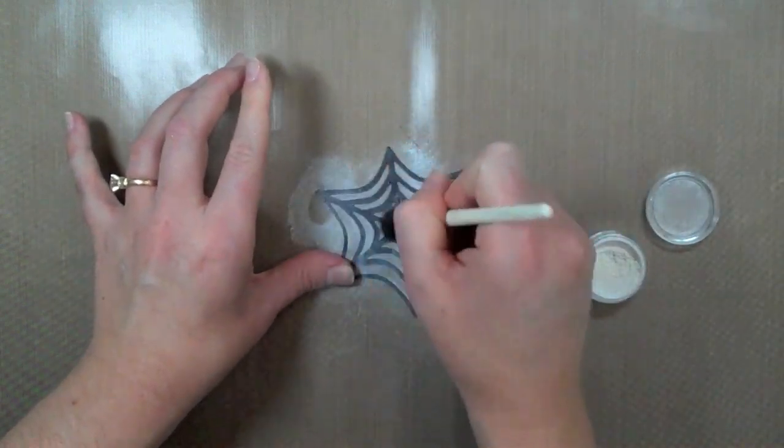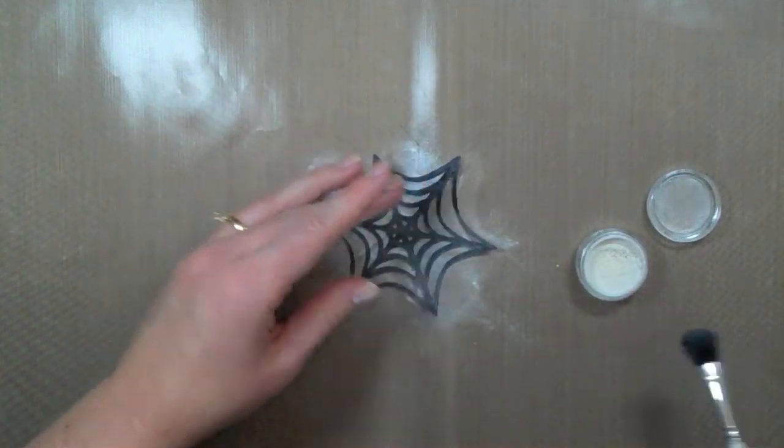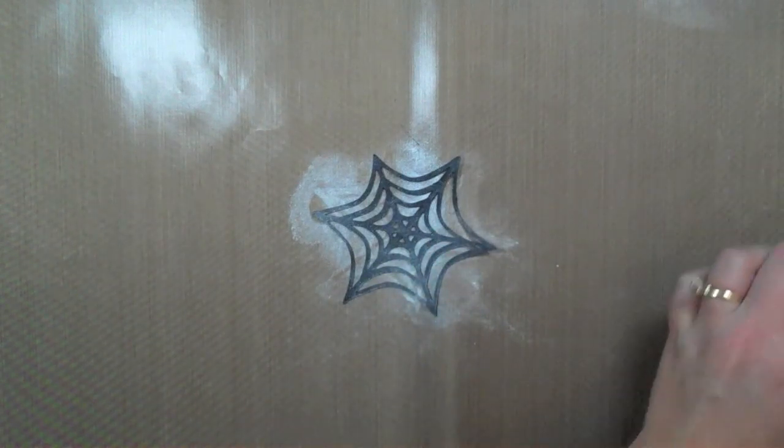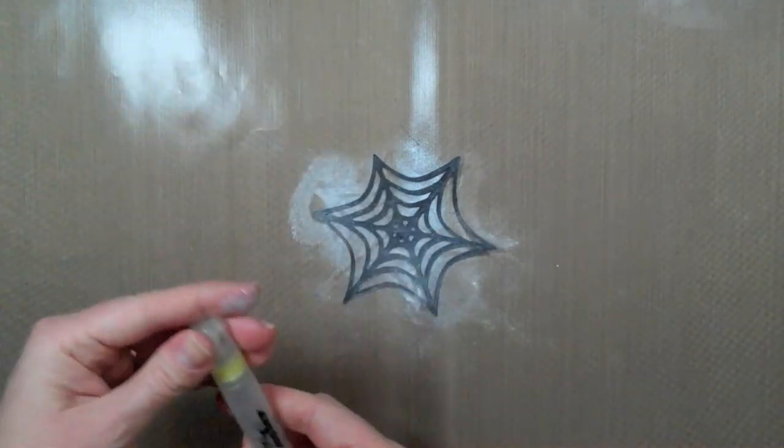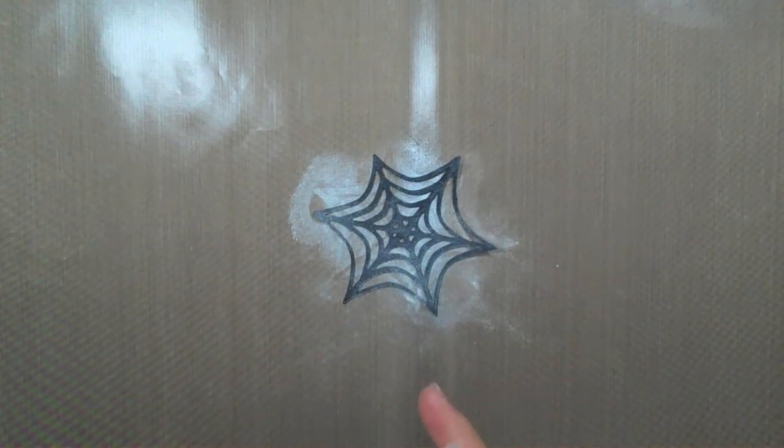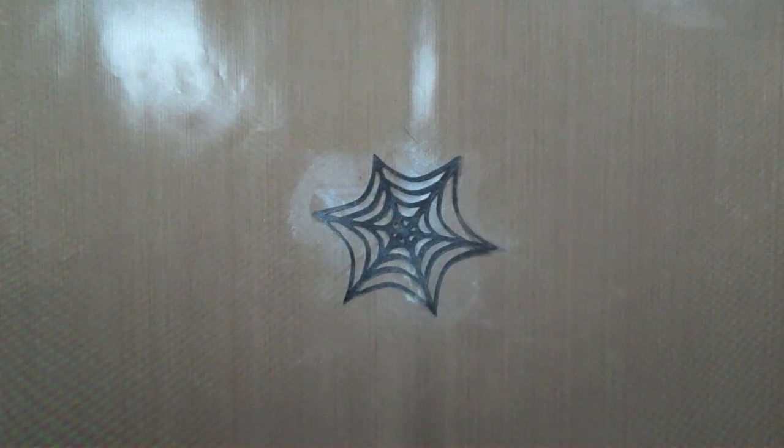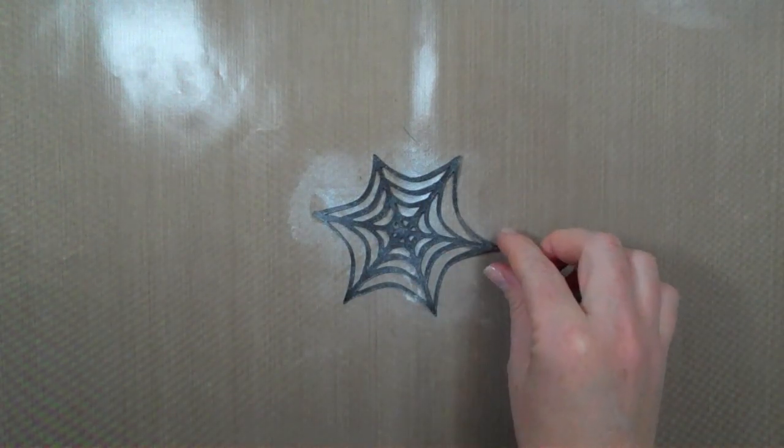So once I get that all kind of coated I can take my water here and I just have a mini mister here and it's just regular water and I'm just going to give it a few like spritzes and that just sets that Perfect Pearl powder on there and then I can set it aside to dry.